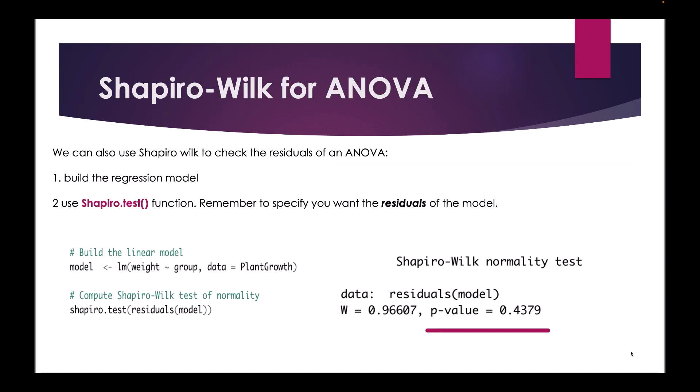To finish off, I'll show how to use these tests to check the residuals of an ANOVA using the Shapiro-Wilk test. Like when we made our QQ plot, we first build the regression model and then use the shapiro.test function in the same way as on the previous slide. The p-value here is greater than 0.05, so we do have normal distribution.